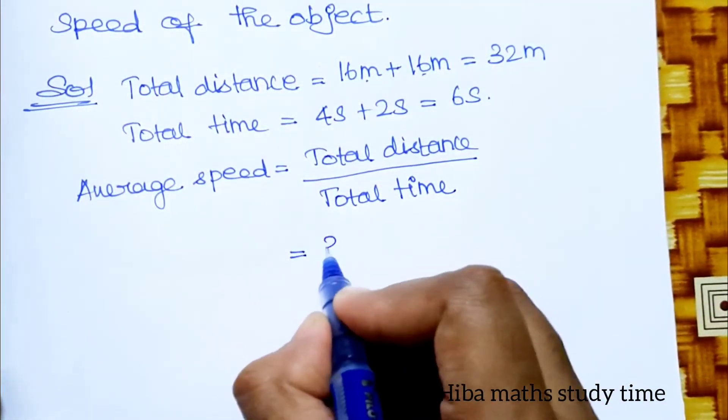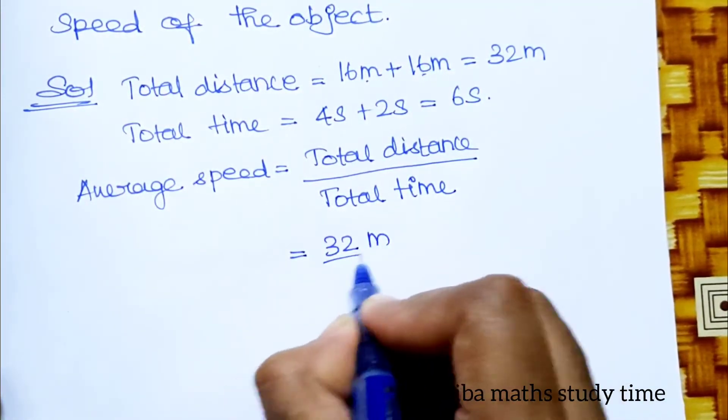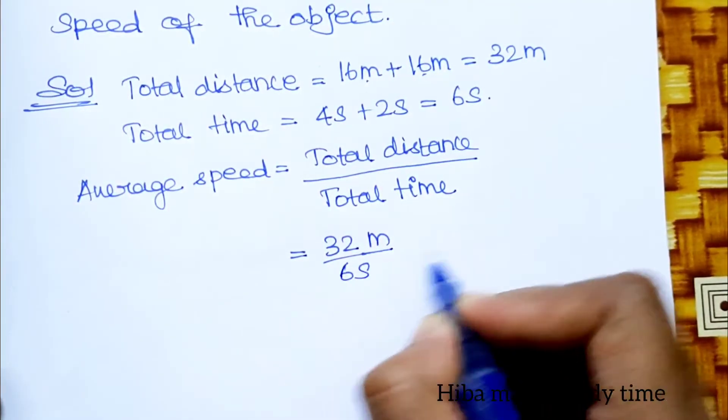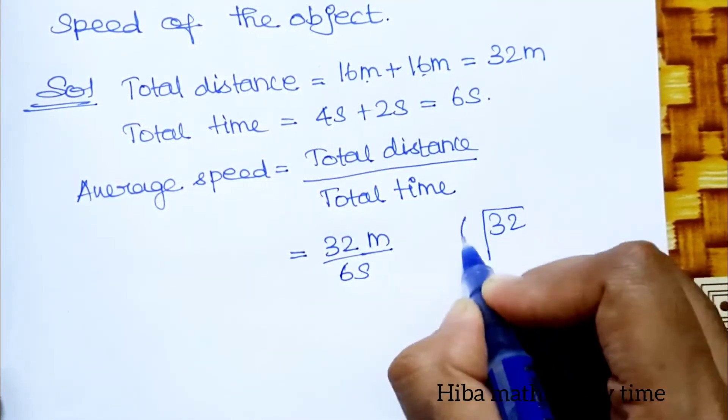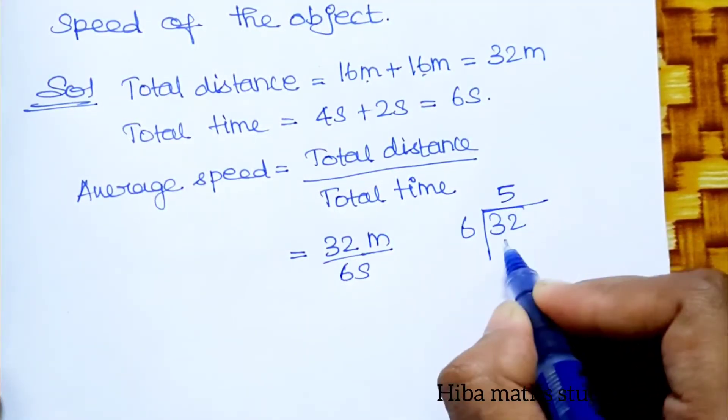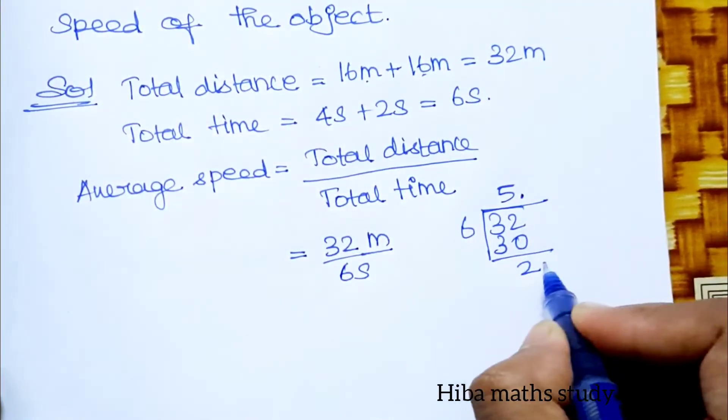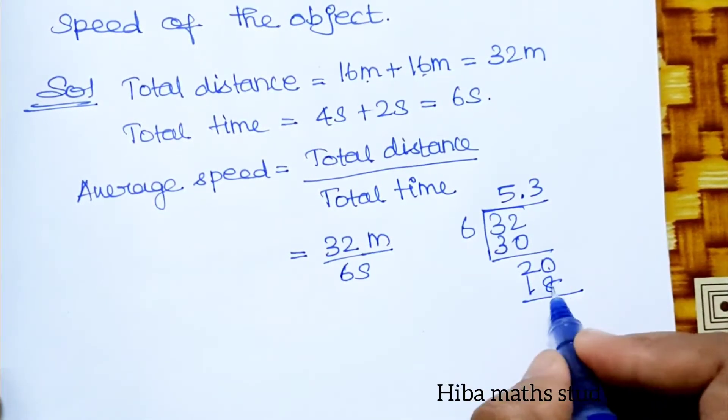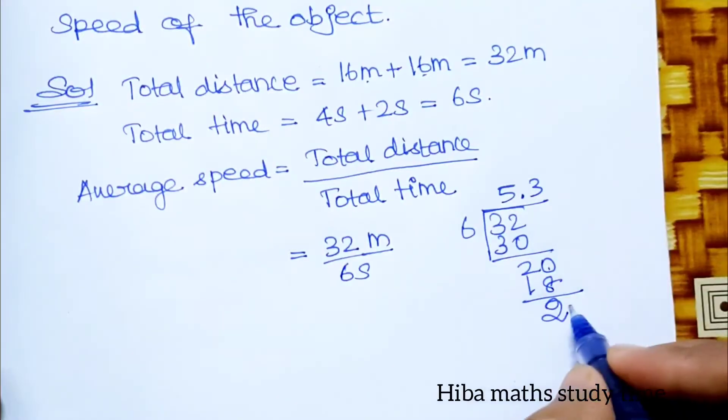If we substitute, total distance is 32 meters divided by total time is 6 seconds. 32 divided by 6: 6 times 5 is 30, balance 2. Put the decimal point.